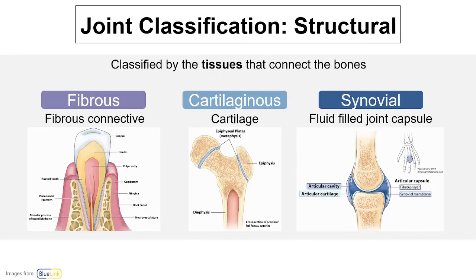Depending on the discipline, different classifications of joints are used. In the context of this anatomy course we will focus on the structural classification, which uses the type of tissue that connects the bones to categorize them. Fibrous joints are connected by fibrous connective tissue, cartilaginous joints through cartilage, and synovial joints through a fluid-filled joint capsule. Of the three, synovial joints are the most common type in our body, so we'll talk quite a bit about them, including a whole video about the components.